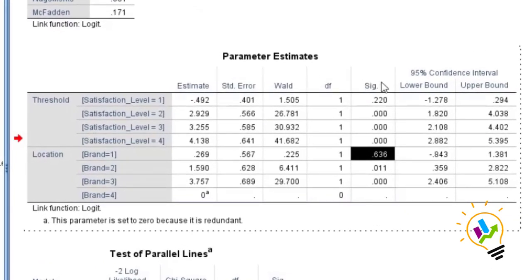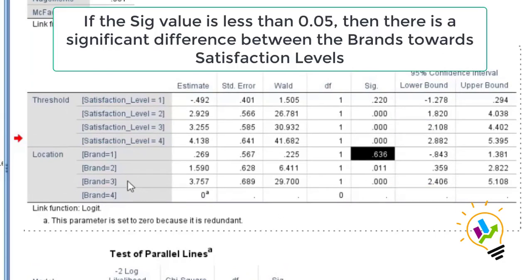Going back to the parameter estimation table, the significant value for brand 1 is 0.636, which is greater than 0.05, so the difference is not significant. Brand 2 is significant and brand 3 is significant, meaning compared to brand 4, brand 3 shows a significant difference. However, brand 1 compared to brand 4 does not have any significant difference.